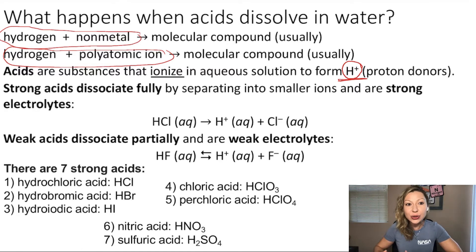So there are two types of acids, strong acids and weak acids. Strong acids will fully dissociate into smaller ions in aqueous solutions. For example, like hydrochloric acid, HCl in aqueous solution is going to form H plus and Cl minus ions, just like ionic compounds.